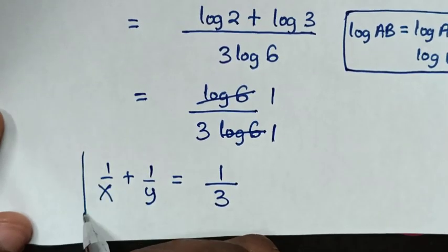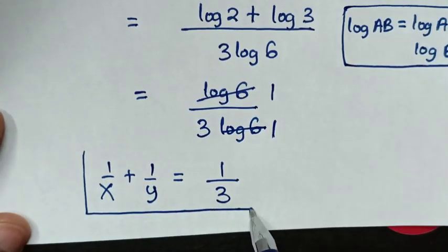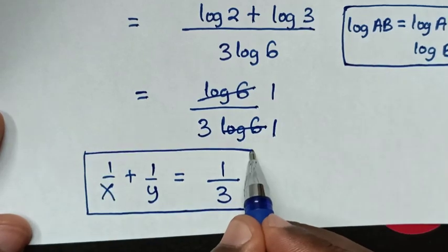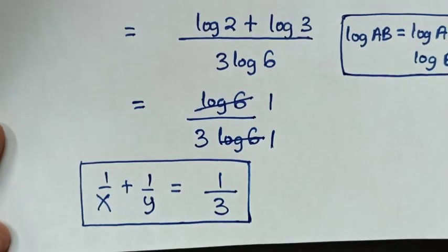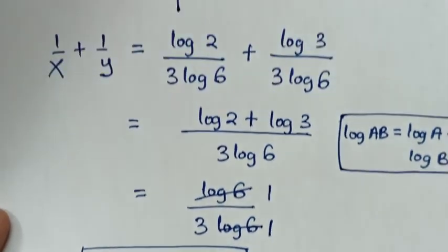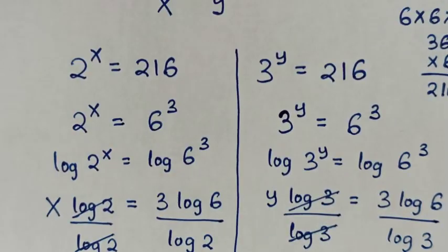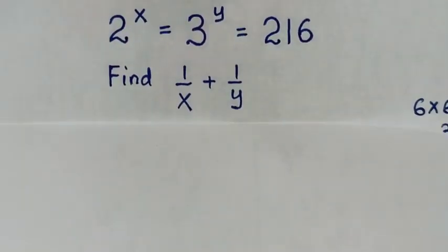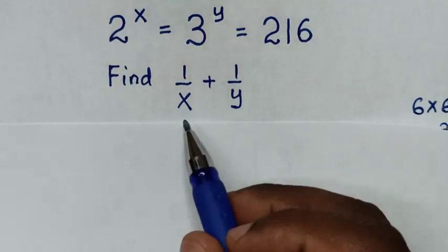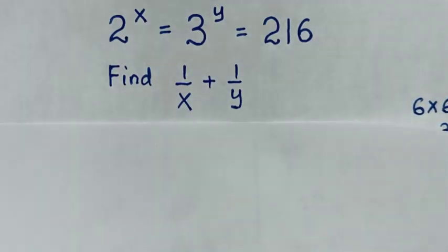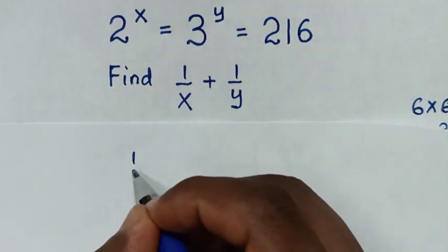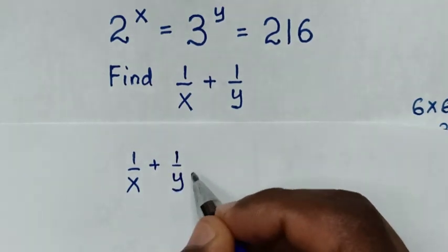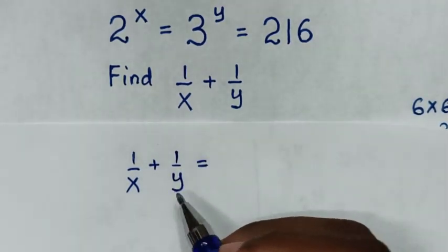So 1 over 3 is the correct answer. Now we are going to solve this problem by another solution. Back to our problem: find the value of 1 over x plus 1 over y.